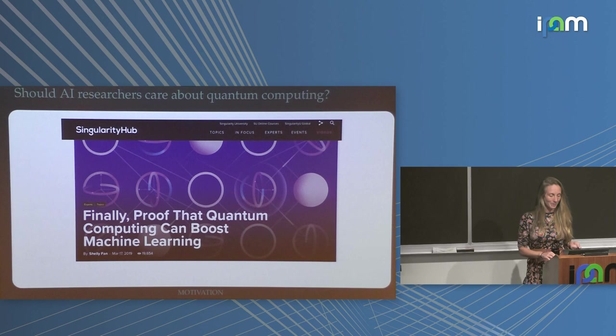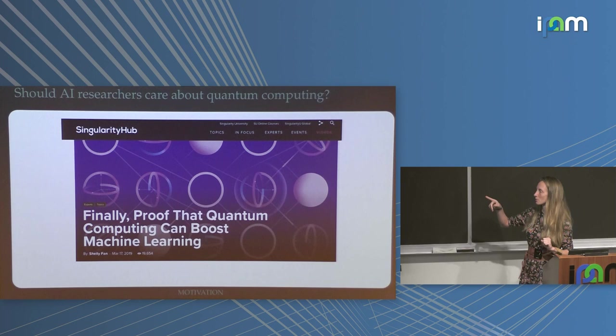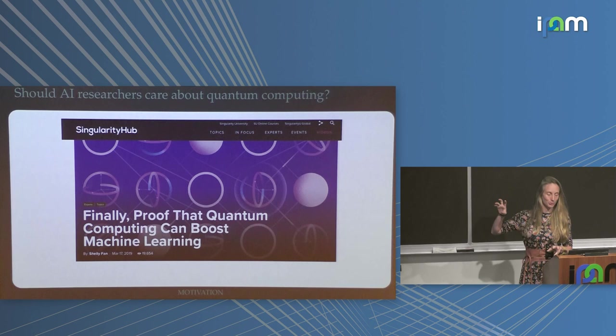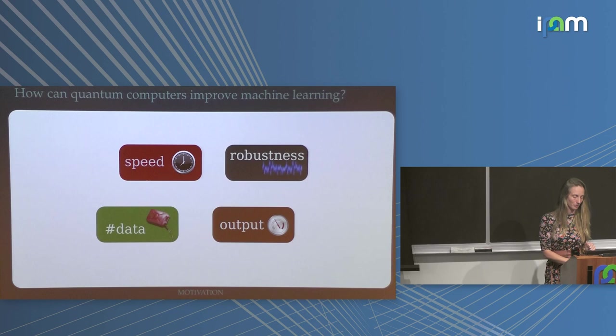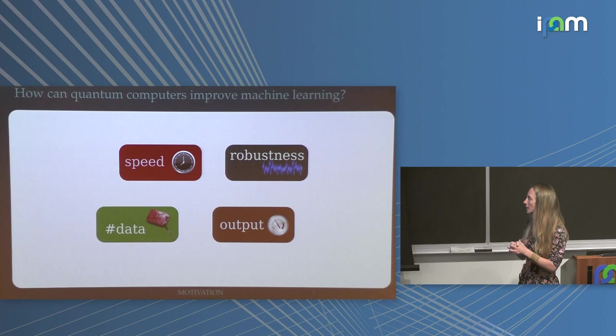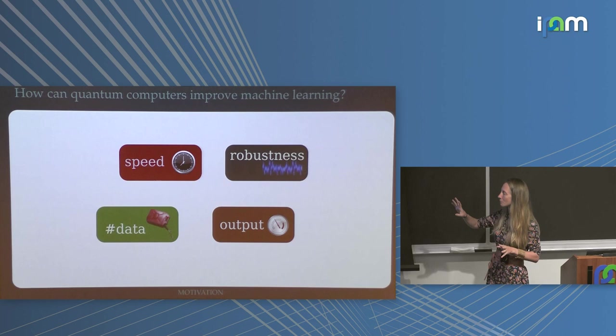Should machine learning researchers even care about this? There were headlines like this, and I hope in about half an hour you can judge this more critically — especially the work that led to the headline, which is a gross oversimplification from the science journalist. Even the journalist, Shelley Fan, was very unhappy about the title — it came from her editor and was put out just before they published. Just two or three more words about the field of quantum machine learning: there are obviously various aspects in which quantum computing could improve machine learning, and early on there were scattered papers looking at sample complexity — could quantum computers learn from fewer data samples?